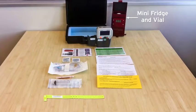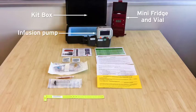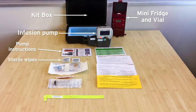To introduce the components, you have the mini-fridge and vial, the kit box, the infusion pump with attached pump instructions, sterile wipes, IV tubing, a blunt tip needle, and 20 ml syringe.